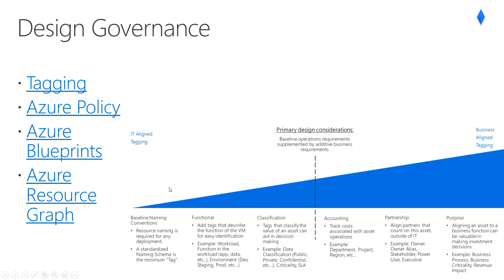Azure Resource Graph is a service in Azure designed to extend Azure Resource Management by providing efficient and performant resource exploration, with the ability to query at scale across a given set of subscriptions so that you can effectively govern your environment. These queries provide the ability to query resources with complex filtering, grouping, and sorting by resource properties, effectively explore resources based on governance requirements, and assess the impact of applying policies in a vast cloud environment.